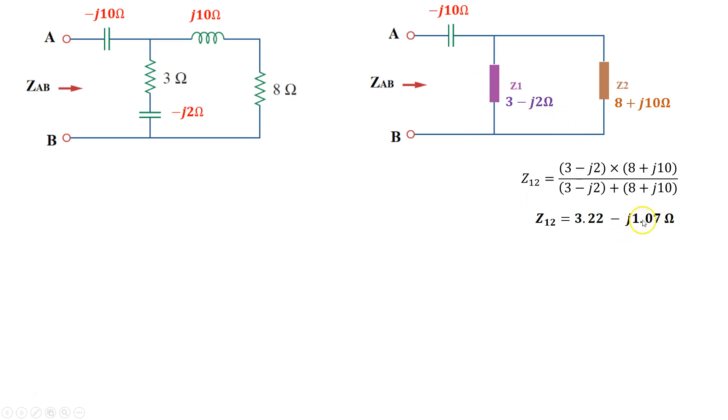Now, when I'm done calculating, what I've reduced my circuit to is the following. I have the -j10 ohm capacitor in series with the new impedance that we just calculated right here, the z12.